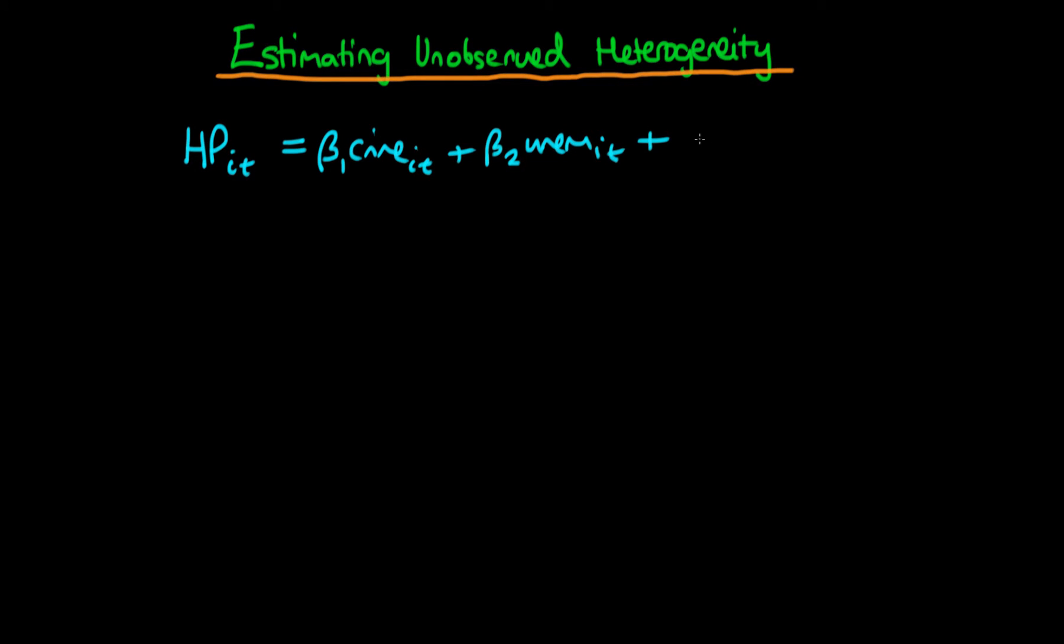And as we spoke about before there is going to be some sort of unobserved heterogeneity term alpha i which is a factor which is constant through time but varies across city. We've also got our idiosyncratic error u_it. And the particular question we're interested in answering is how do we estimate this value of the unobserved heterogeneity.